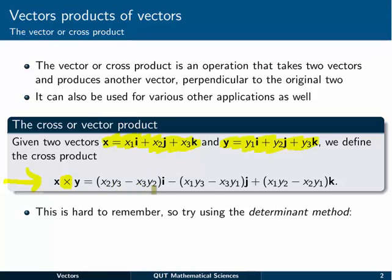x2y3 minus x3y2 in the i direction, and so on down the line. It's a little hard to remember, so there's another way that we can actually do it, although you're welcome to remember it if you like to.